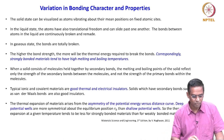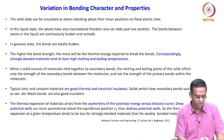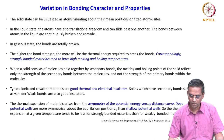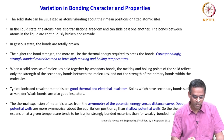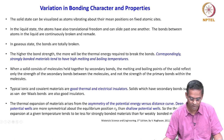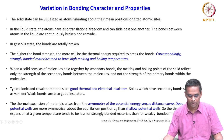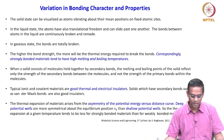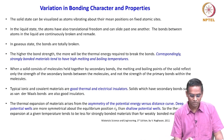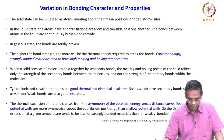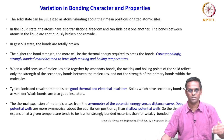The thermal expansion of materials arises from the asymmetry of the potential energy versus distance curve. Deep potential wells are more symmetrical about their equilibrium positions R-naught than shallow potential wells. Therefore, thermal expansion at a given temperature tends to be less for strongly bonded materials than for weakly bonded materials. We will look at this in much more detail in coming lectures by examining the geometry of the potential energy curve.